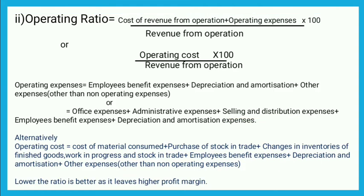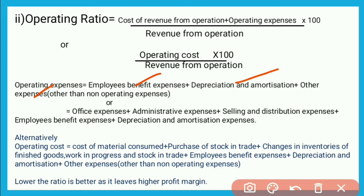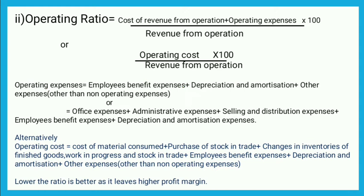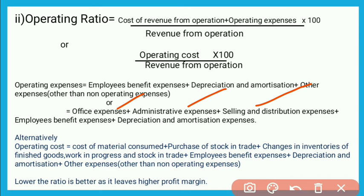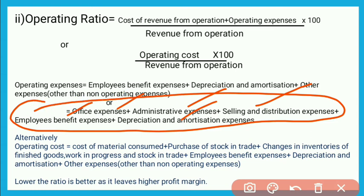Cost of revenue from operations find करने के बाद operating expenses find करेंगे। Operating expenses के लिए पहला formula: Employees Benefit Expenses + Depreciation and Amortization + Other Expenses other than non-operating expenses। अगर इस formula के according information नहीं है तो: Office Expenses + Administrative Expenses + Selling and Distribution Expenses + Employees Benefit Expenses + Depreciation and Amortization — इन सभी का total = Operating Expenses।